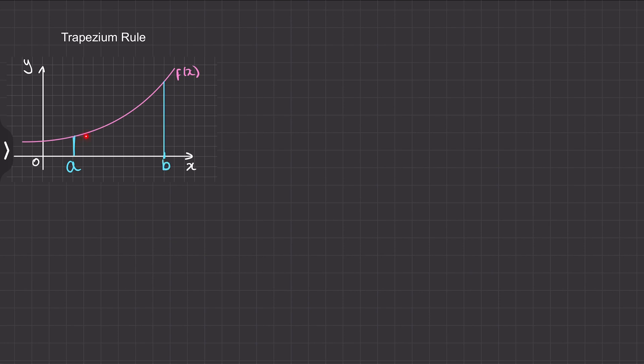So the way we're going to do this is that we're going to split this section into three equal strips or three strips of equal length. So we have our first strip, our second strip, and our third strip. And by making each strip into a trapezium, you can see we're approximating the area underneath this curve.